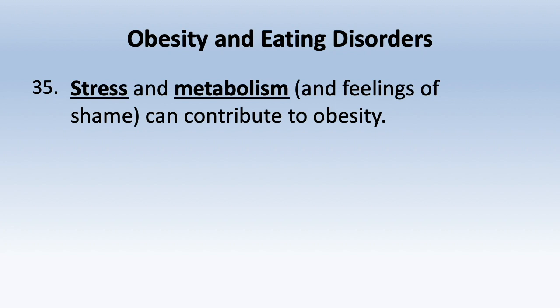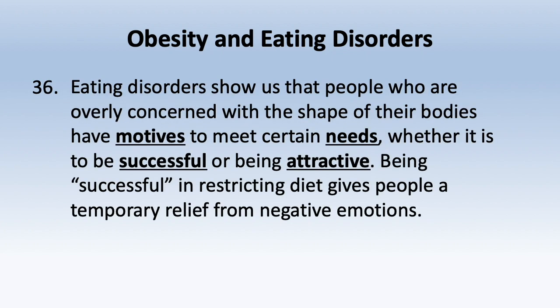We want to help people cope with stress and shame and encourage their metabolism. Metabolism is how fast or slow your body burns calories — high metabolism means staying thin, slow metabolism makes it easy to gain weight. One way to increase metabolism is through exercise. Eating disorders show that people overly concerned with body shape have motives to meet certain needs — restricting diet gives temporary relief from negative emotions, setting people up for eating disorders.